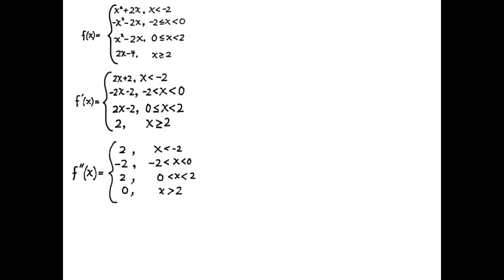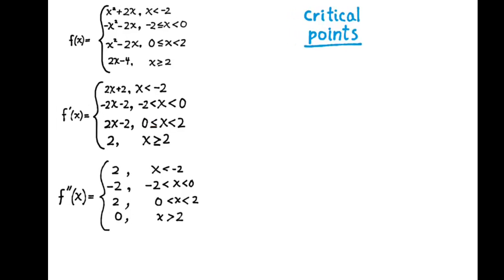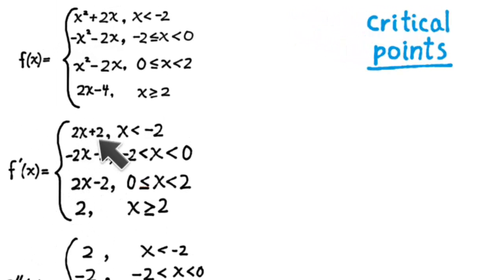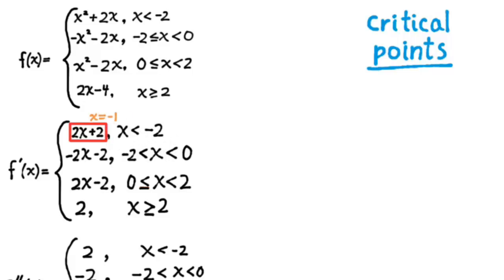Now that I have found all the derivatives, let's analyze this curve by looking for its critical points. The first critical points we'll look for are the stationary points — places where the first derivative is equal to 0. Looking at 2x plus 2, it has a zero at x equals negative 1. But does that mean it's a stationary point? No, because x equals negative 1 is outside of the subdomain where 2x plus 2 applies, so we reject that. Does negative 2x minus 2 have a zero?